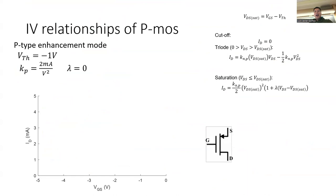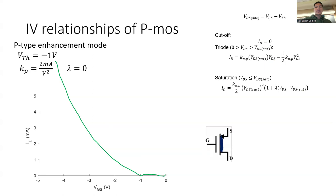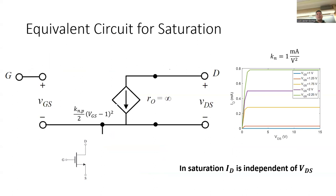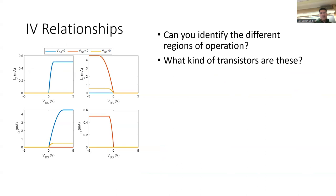For depletion-mode PMOS, the threshold changes sign — it becomes positive (since PMOS polarities are reversed). On the ID vs VGS quadratic curve, this just shifts things so that at VGS=0 the transistor is normally on, same concept as the NMOS depletion case.